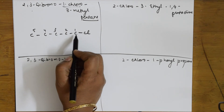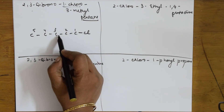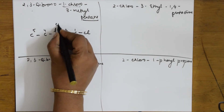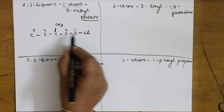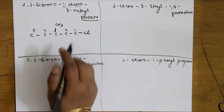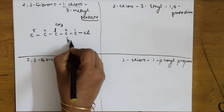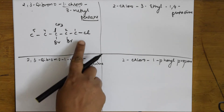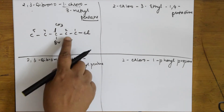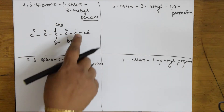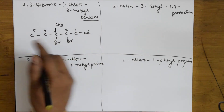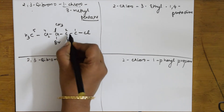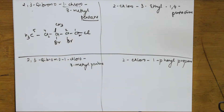So: at carbon one there is chloro, at carbon two there is bromo, at carbon three there is also bromo, and at carbon three there is a methyl group. Filling hydrogens: CH₃, CH₂, CH, CH, CH₂. Done — 1-chloro-2,3-dibromo-3-methylpentane confirmed.